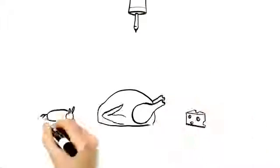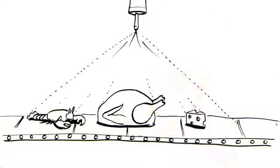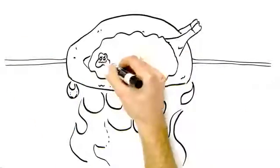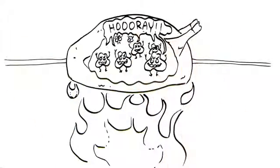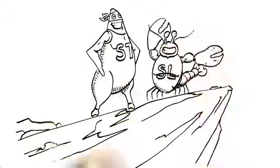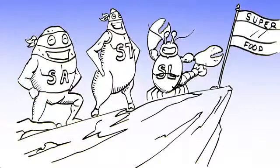While chemical processing treats primarily the outside of the item and heating tends to overheat the outside in order to reach the desired internal temperature, Hyperbaric HPP is applied uniformly throughout the product with the product already in the package.